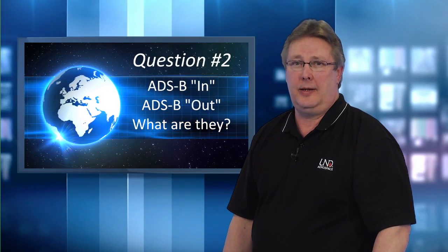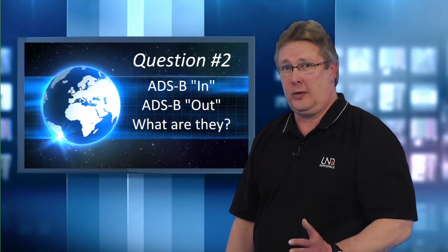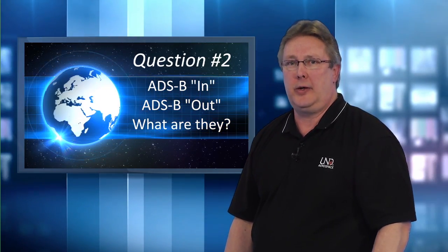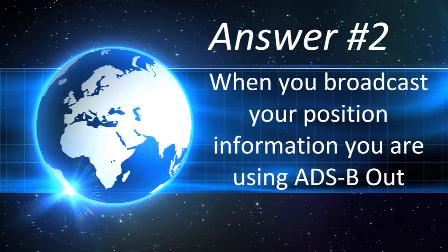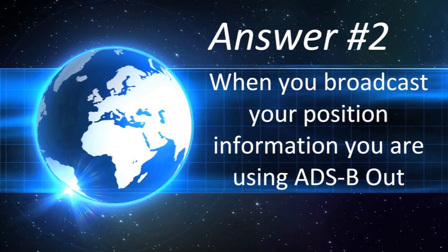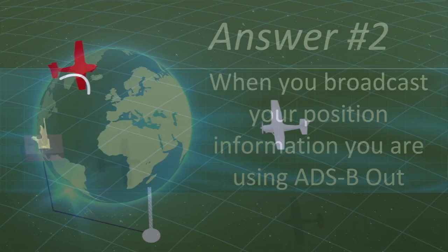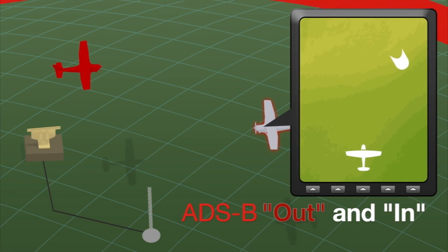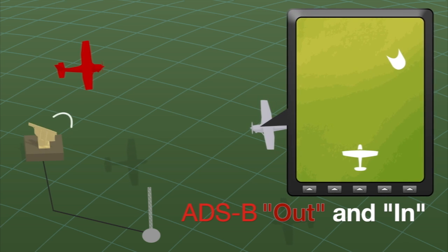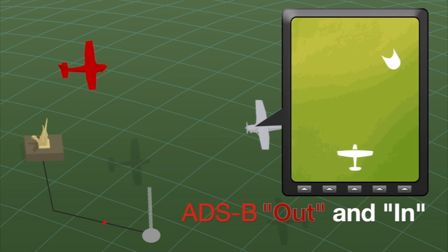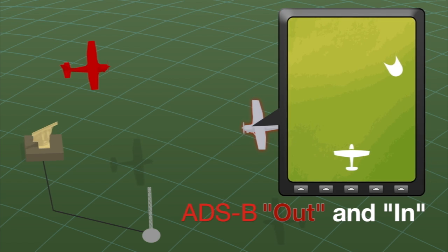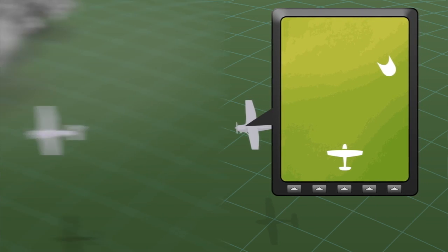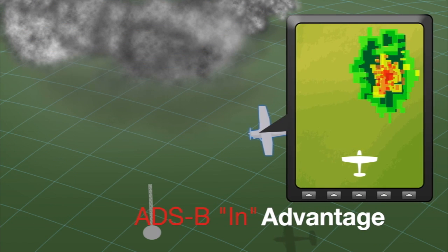What is ADS-B In and what is ADS-B Out? If you're transmitting ADS-B information regarding your aircraft, you're equipped with ADS-B Out. Aircraft equipped with ADS-B In will receive that information from ground stations or via air-to-air communications between aircraft. The safest configuration is ADS-B Out and In. With ADS-B In, you can receive valuable information regarding other aircraft in your vicinity along with weather updates.